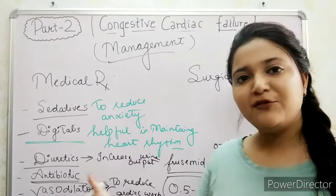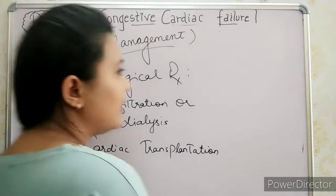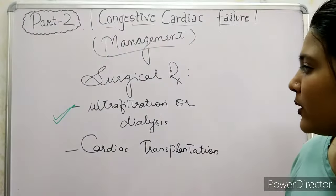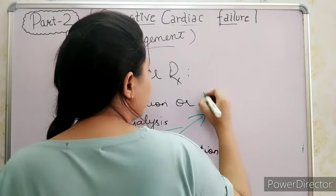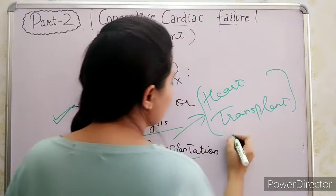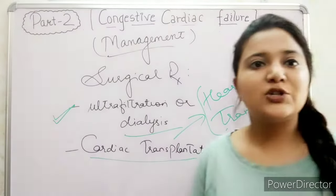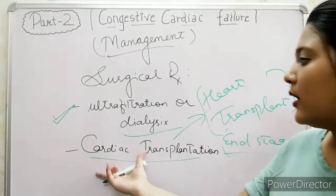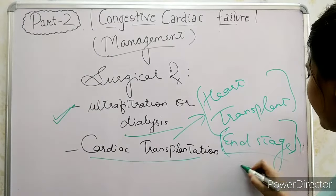In surgical management, ultrafiltration or dialysis is performed because in pathophysiology, glomerular filtration rate decreases and tubular absorption increases. Next is cardiac transplant, which means heart transplant. If CCF reaches end stage and cannot be corrected by medical or nursing interventions, we will perform cardiac transplantation.